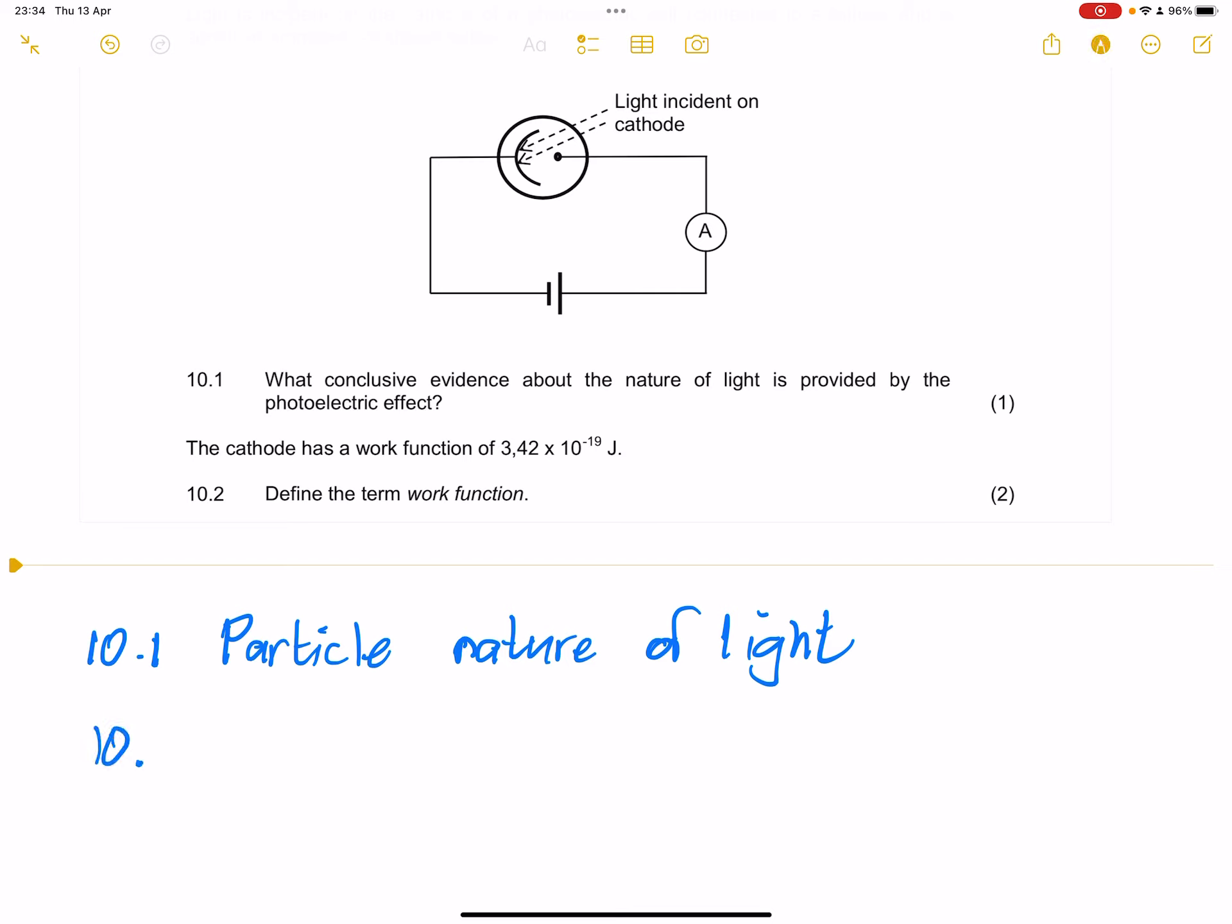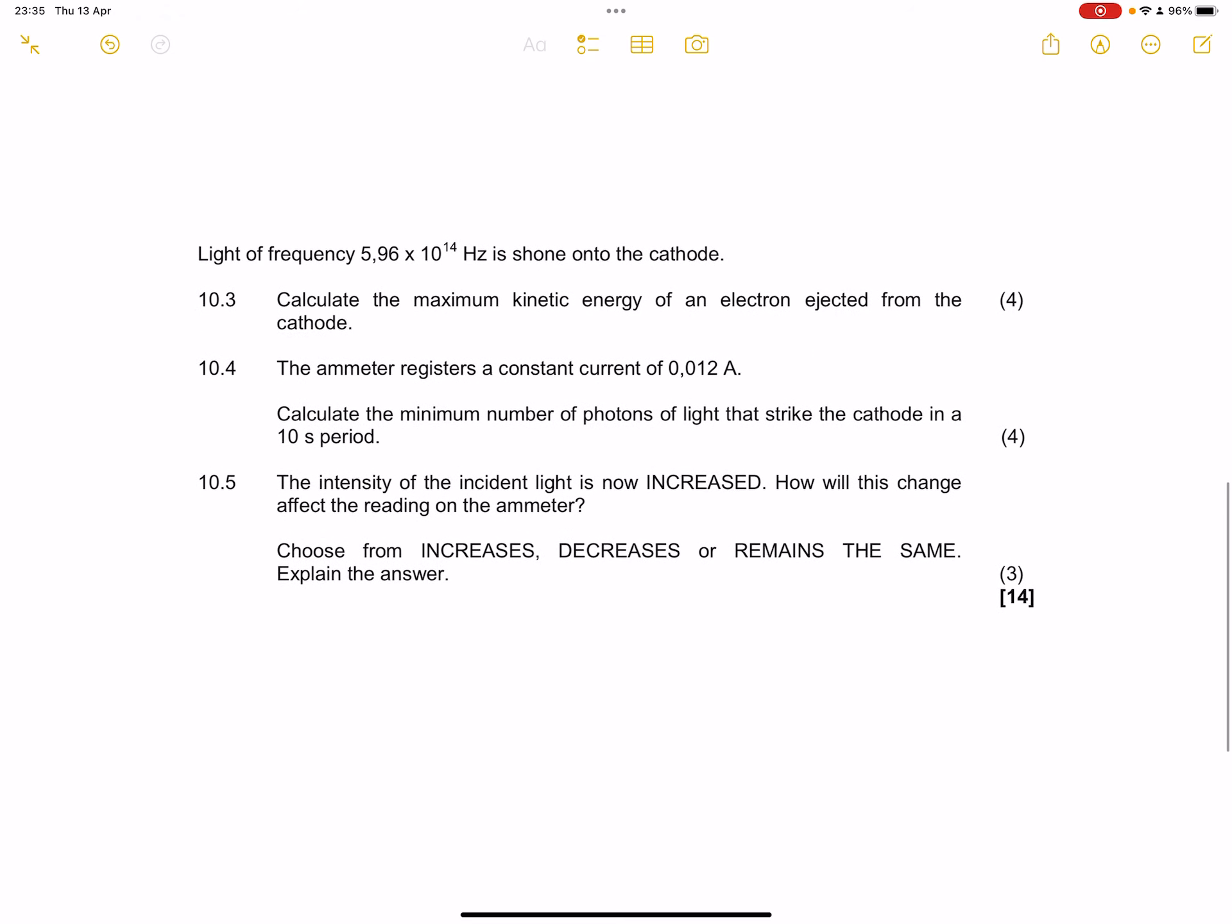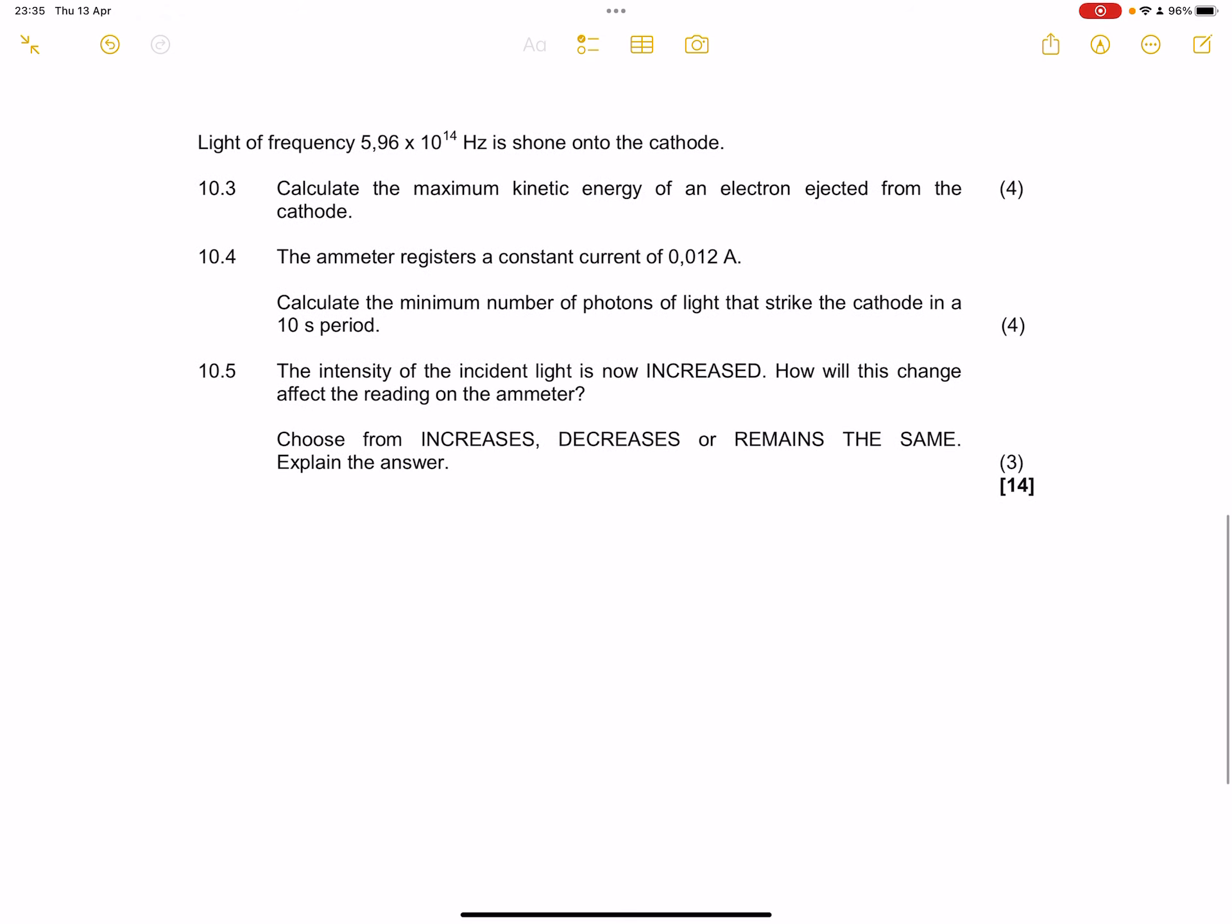So now for the next one they say to us, the cathode has a work function of 3.42 times 10 to the exponent minus 19 joules. Define the term work function. Remember, we say this is the minimum energy required in order to emit electrons from a metal surface. So let's go on to the next question.